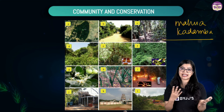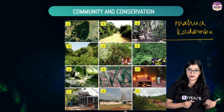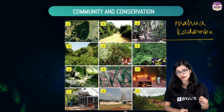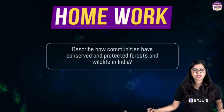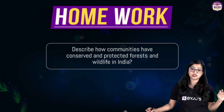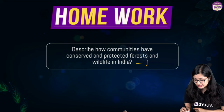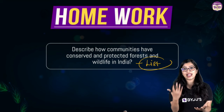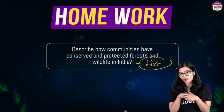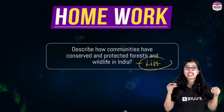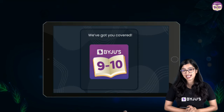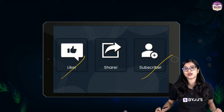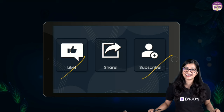With this we come to the end of the entire chapter. Conservation and conservation strategies are very important in this chapter, so please make a note of it. Homework question: Describe how communities have conserved and protected forest and wildlife in India — list down the topics we have discussed. I hope you found this class helpful. Don't forget to subscribe, like, and share this video with all your friends. Take care, lots of love — bye!